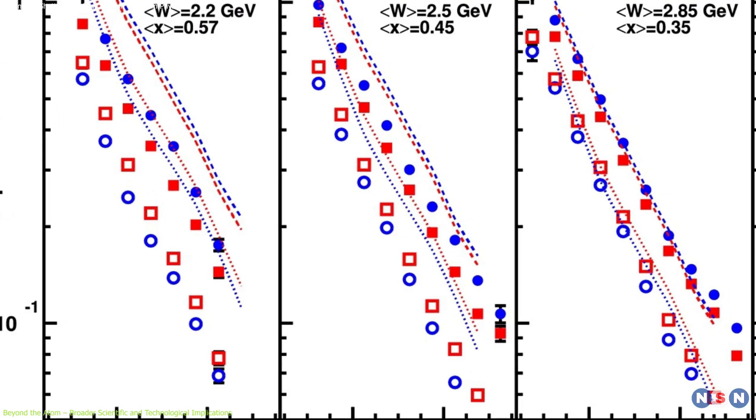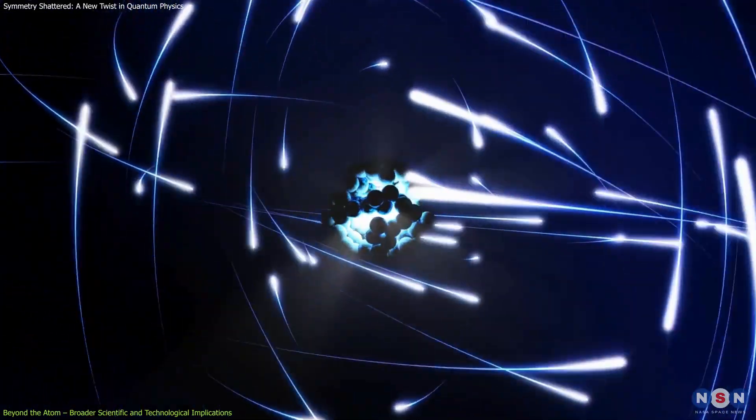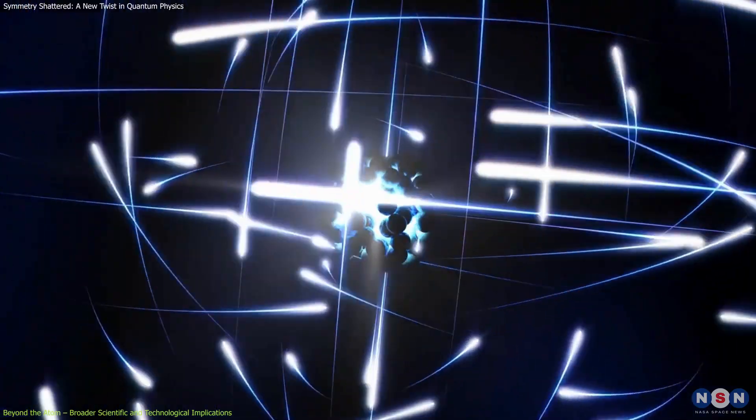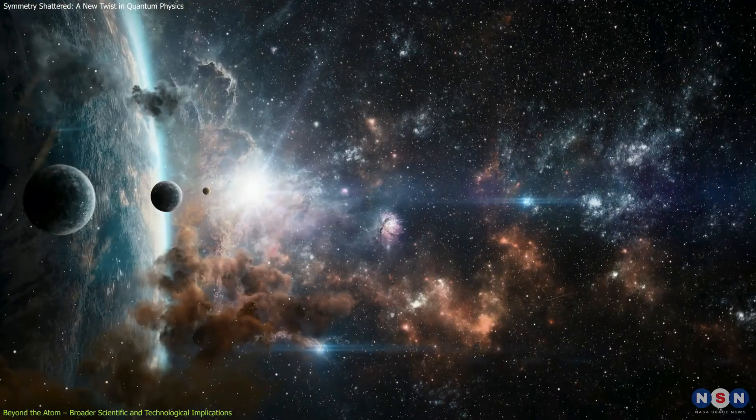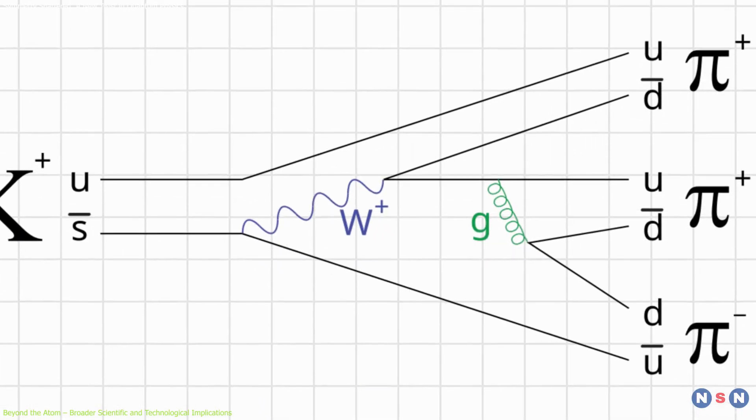Ultimately, symmetry breaking isn't a flaw in nature's code—it's a profound clue. In every tiny deviation, the universe is giving us a glimpse into its deeper workings, from the transformations of neutrinos to the subtle imbalance of neutrinos.